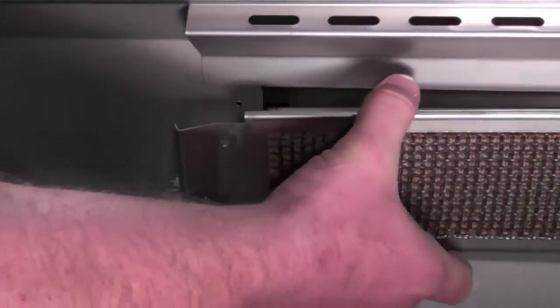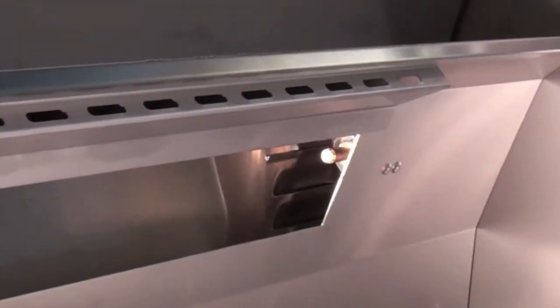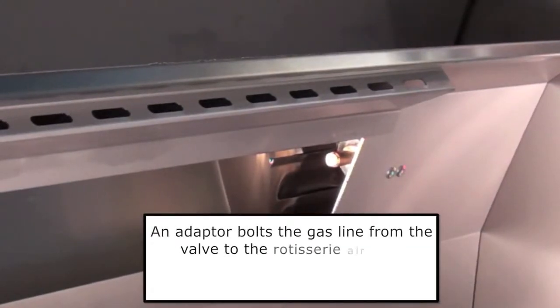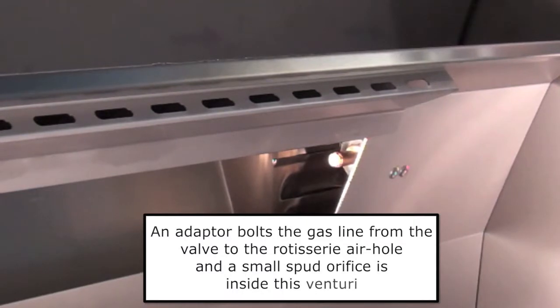With these unthreaded, we can slide the burner out of the grill without disconnecting the electrode. Within the cavity, opposite the ignition, an adapter bolts the gas line from the valve to the rotisserie air hole, and a small spud orifice is inside this venturi.